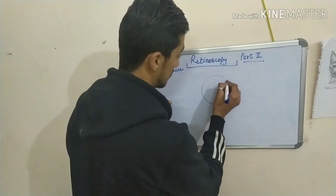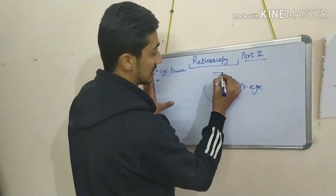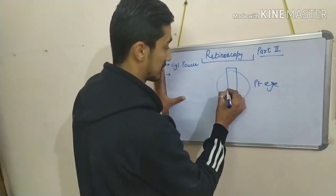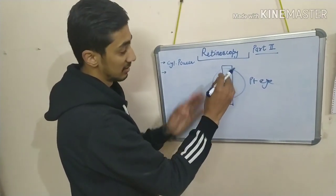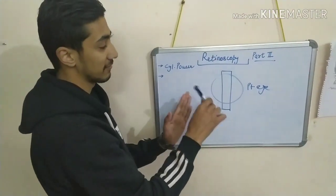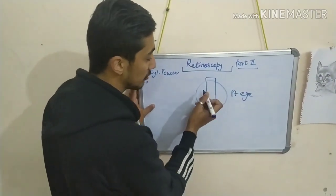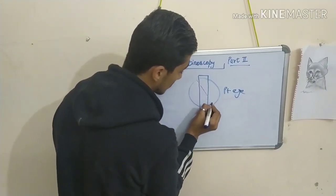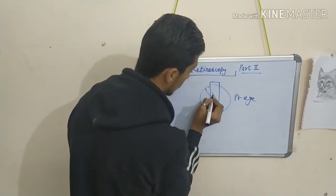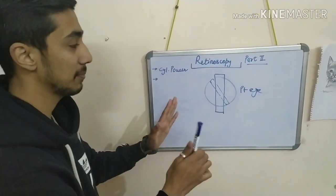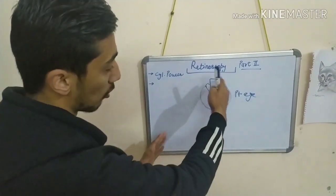For example, this is a patient's eye. We put the retinoscopic slit here. First, you have to check all meridians to find where the reflex is finest. You put the slit here, and if you check the whole meridian and find that the reflex is finest at a particular position — this is the condition when you put the slit on the patient's eye. This is the finest reflex you find in the whole meridian.